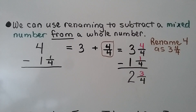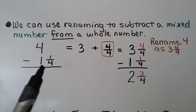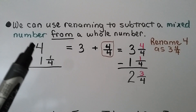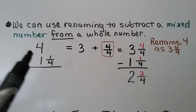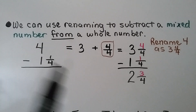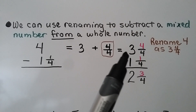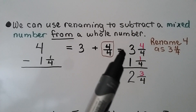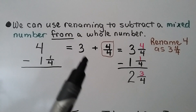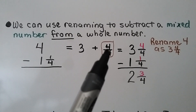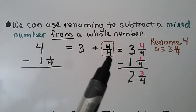We can use renaming to subtract a mixed number from a whole number. Here we have a mixed number and we need to take it away from a whole number — there's no fraction here. But if we rename this 4 as a 3 and 4 fourths, same numerator and denominator, so it's equal to 1.